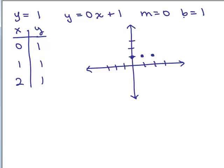But the other way you could have done this is by plotting the y-intercept at (0, 1). And the slope, think of it as 0/1: you go over 1 and not up or down at all. Over 1, not up or down at all, you get the exact same points. So I can graph this horizontal line using the slope intercept method or by plotting points.